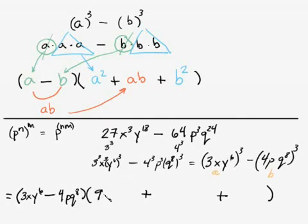Then you square the a, and you get 9x squared y to the twelfth. Sorry, y to the twelfth. And you square the b, and you get 16p squared q to the sixteenth.